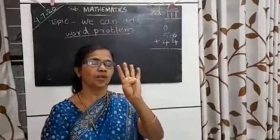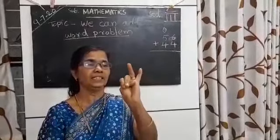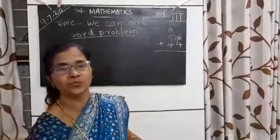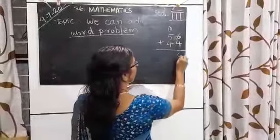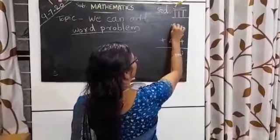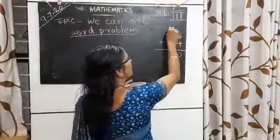6 plus 4: 7, 8, 9, 10. We got 10. Write 0 here and carry over 1. Write the carry over here.